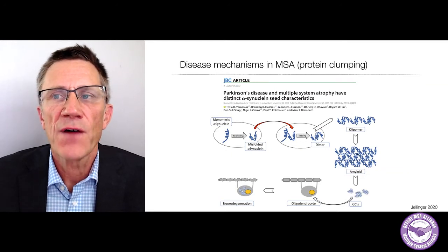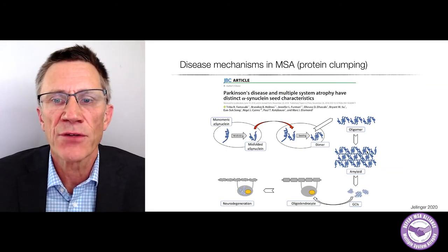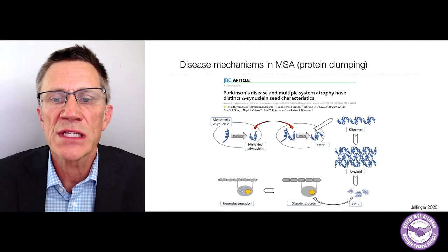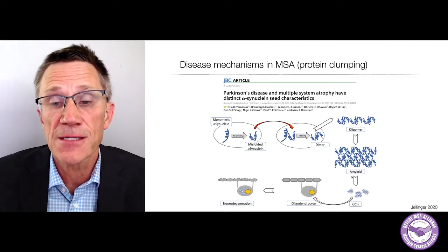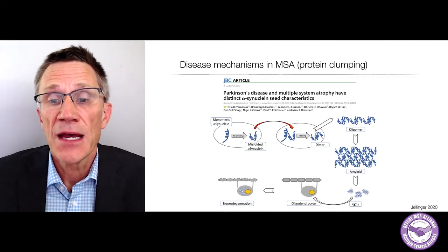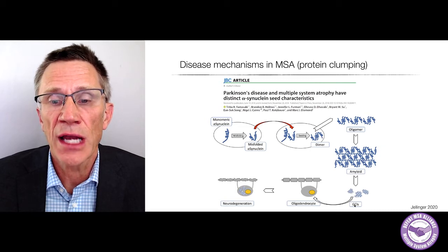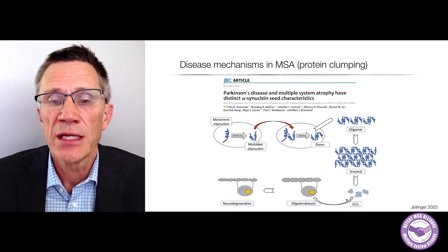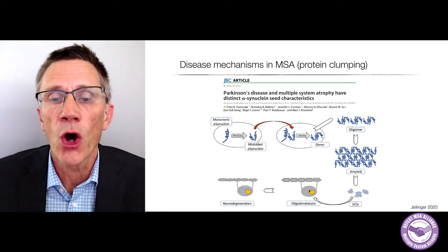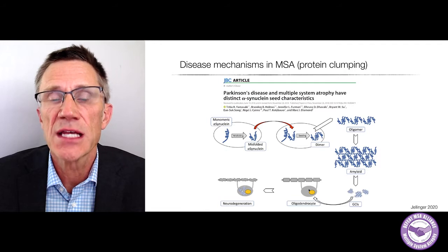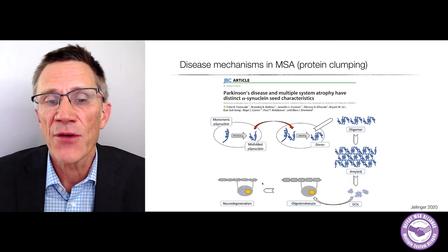Finally, they form large sheets — several oligomers together — and we call this amyloid. These are the aggregates. They're inside glial cells — glial cell inclusions in multiple system atrophy, in oligodendrocytes — and somehow this leads to neurodegeneration.